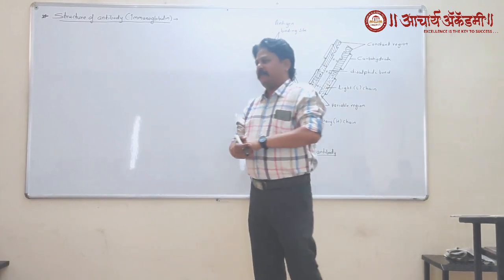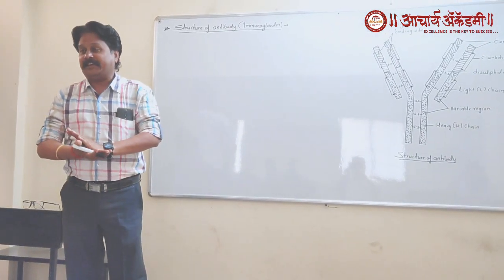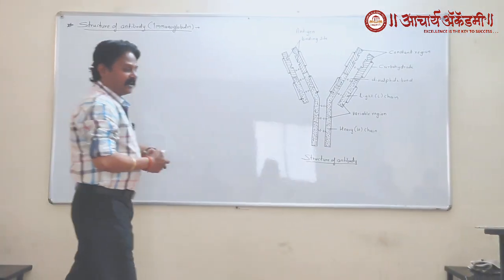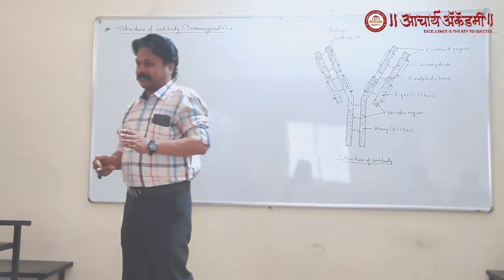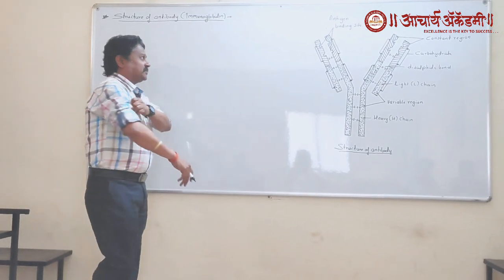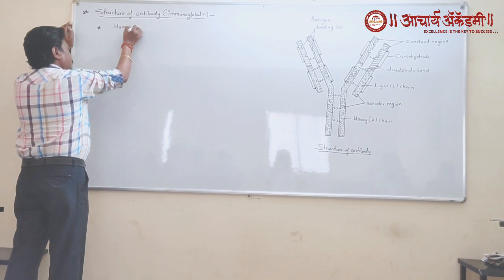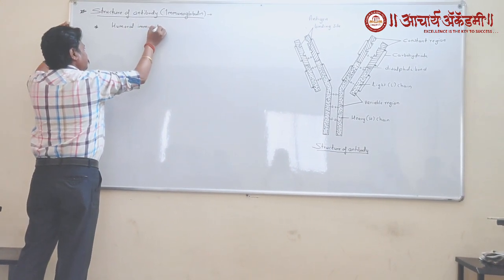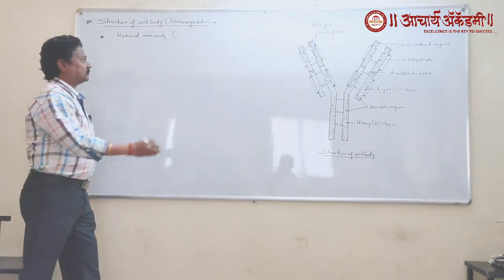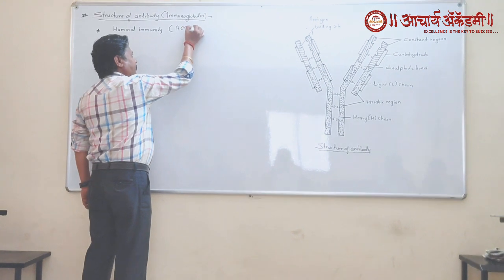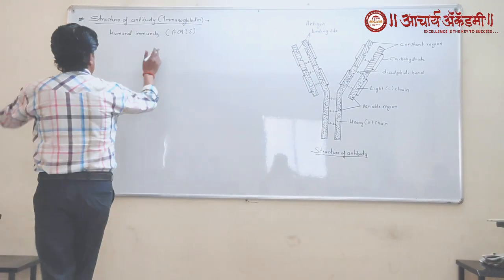Active acquired immunity, on the basis of cell type, is of two different types. Yesterday we discussed the first type — CMIS, which means Cell Mediated Immune System. This immune system is operated by T-lymphocytes. The second type involves B-lymphocytes, which provides humoral immunity. This is called the Antibody Mediated Immune System.